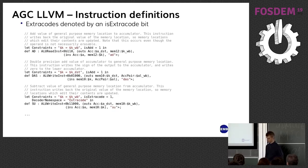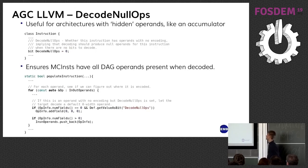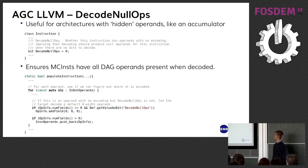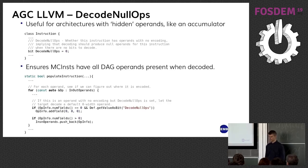Another issue with decoding these instructions was that accumulator operands were specified as DAG operands but had no encoding related to them. A fix for this is the decode null ops patch. It turns out that the fixed-length decoder emitter does not add fields that don't have bits related to them or to their tied operands, and this causes problems as other parts of the MC layer assume all DAG operands are present. The fix was to add a flag for instructions where this is the case, and for the fixed-length decoder emitter to add a default zero-width field to the op info for instructions with this annotation.